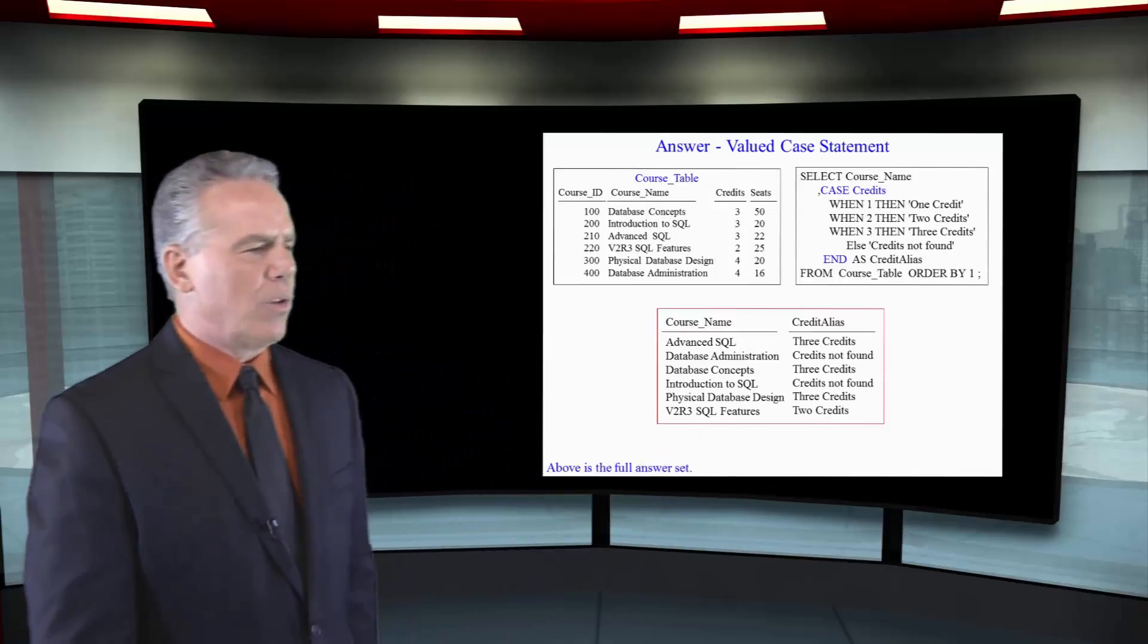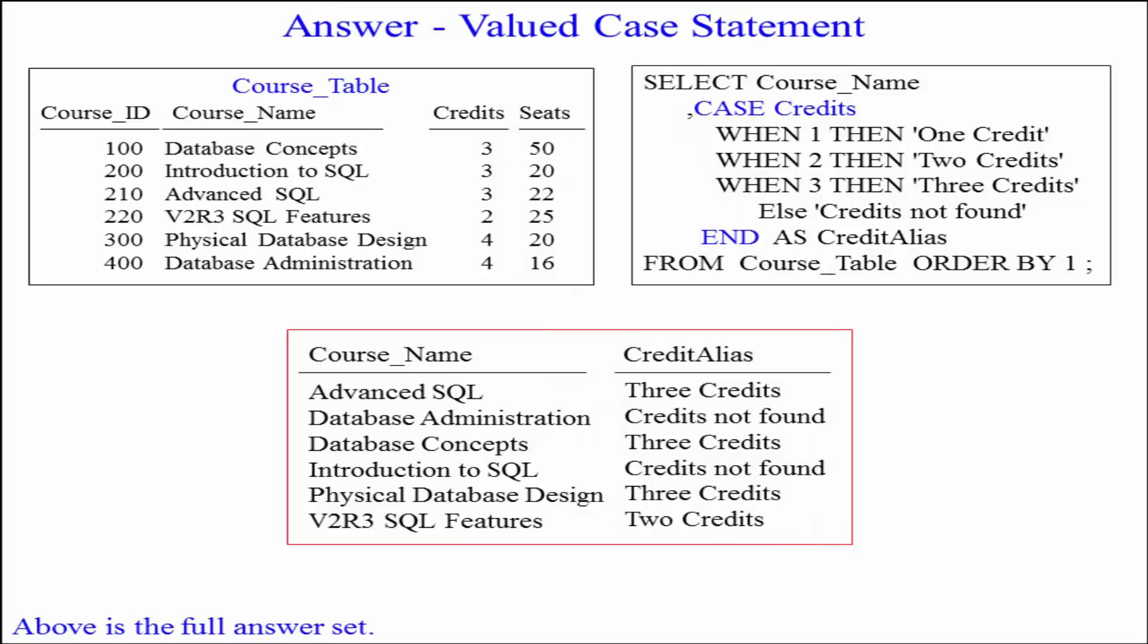Then it goes and gets the next row and says, okay, it's Database Administration and that's going to be four credits. So, here's where you got a chance to learn something. You can see here it says, is it one? No. Two? No. Is it three? No. So, we have an else statement here.